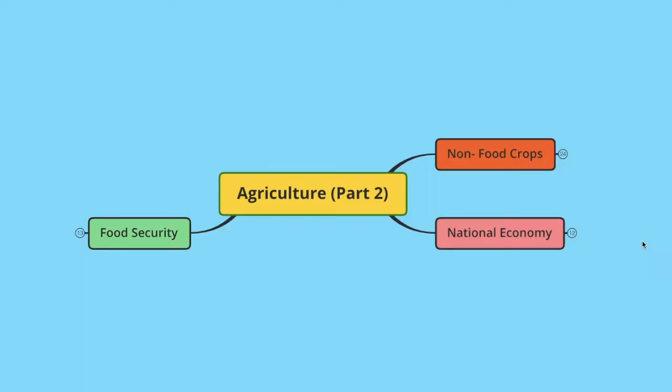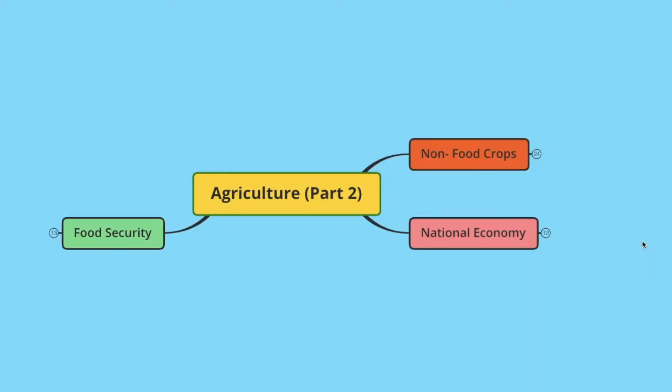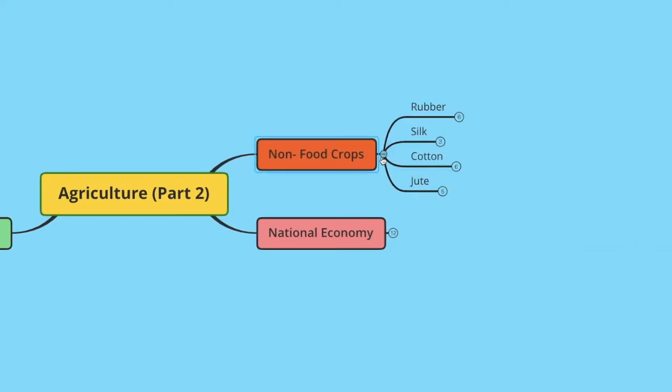Hello and welcome. Today we are going to deal with Agriculture Part 2. In the previous part we dealt with types of farming, grain crops, non-grain crops, etc. If you missed it, no problem — there it is and also in the description box below. In Part 2, let's learn something different. If you are new to this channel, don't forget to hit the subscribe button and also the bell icon. Let's get into this class and talk about non-food crops — here we have rubber, silk, cotton, and jute.